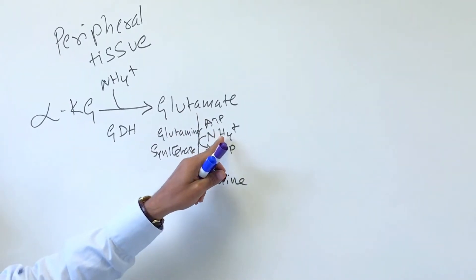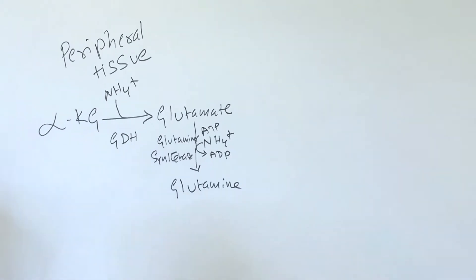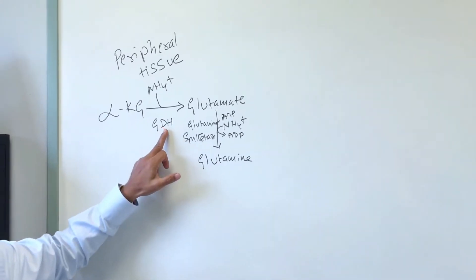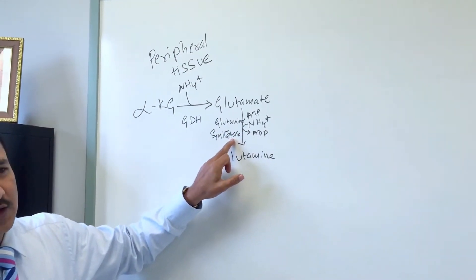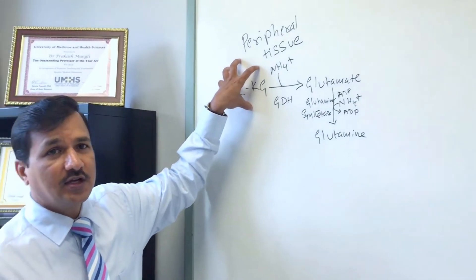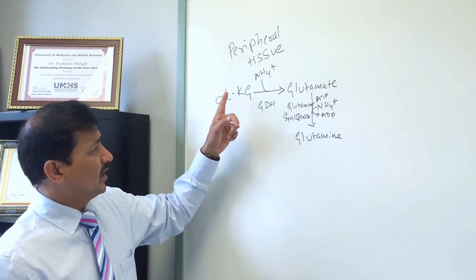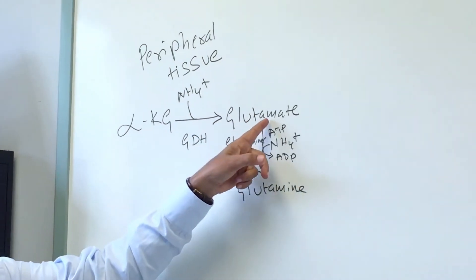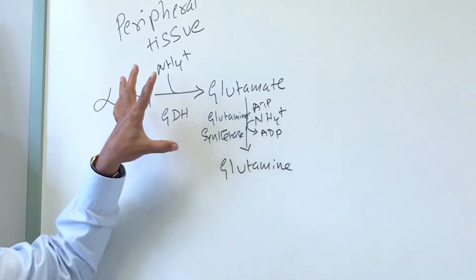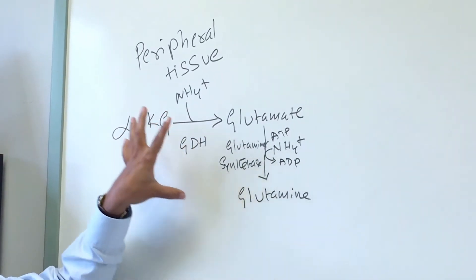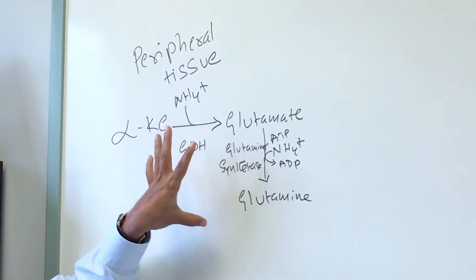So these are two key examples of ammonium ion fixation: glutamate dehydrogenase, which fixes one ammonium ion, and glutamine synthetase, which fixes another. The carbon skeleton of alpha-ketoglutarate is therefore able to accept two ammonium ions — alpha-ketoglutarate takes one to become glutamate, and glutamate takes one more to become glutamine.